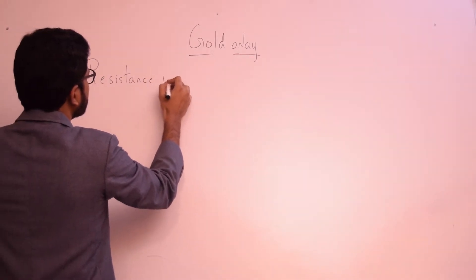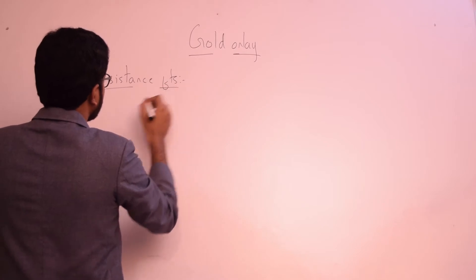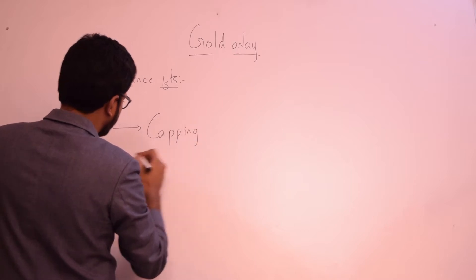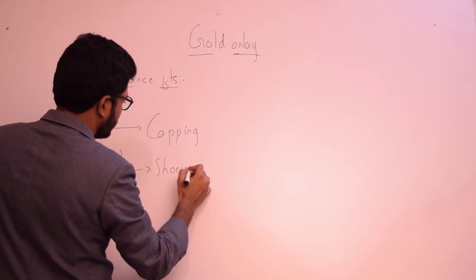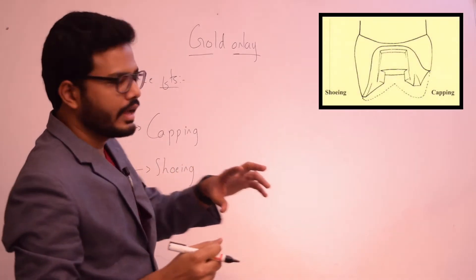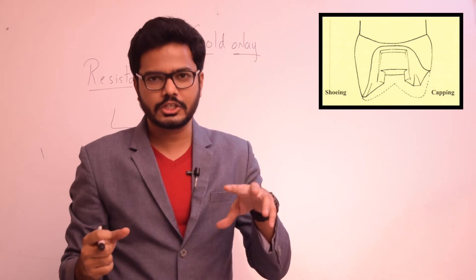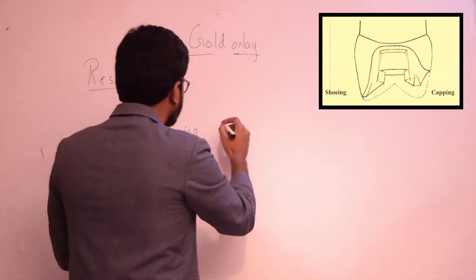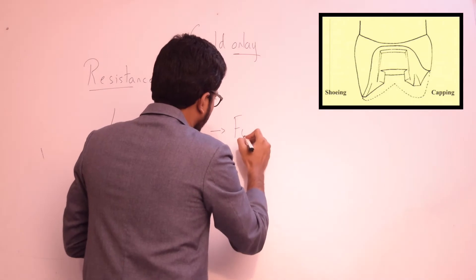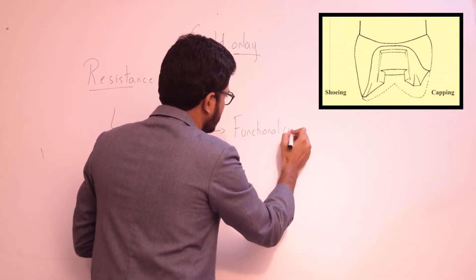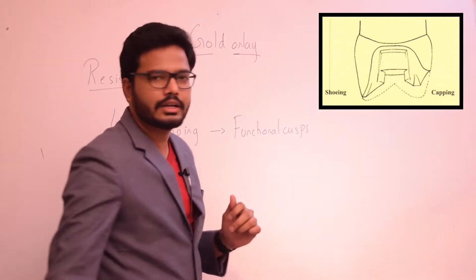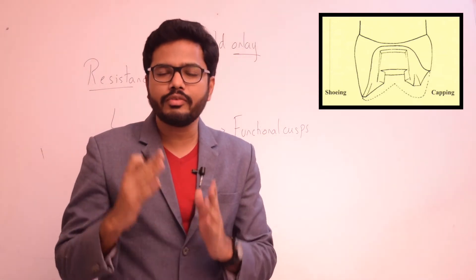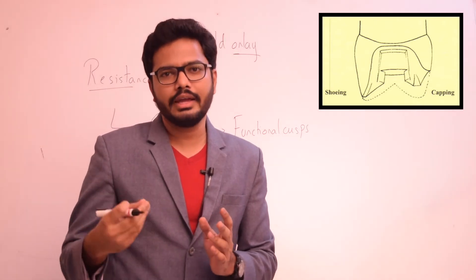Capping is coverage of the entire cusp with a gold cast restoration or any cast restoration. This capping is usually done in the case of functional cusps — in the maxilla, the palatal cusps; in the mandible, the buccal cusps. Showing, on the other hand, is a veneering procedure — veneering of a non-functional cusp by means of a slight preparation bevel or finishing bevel.